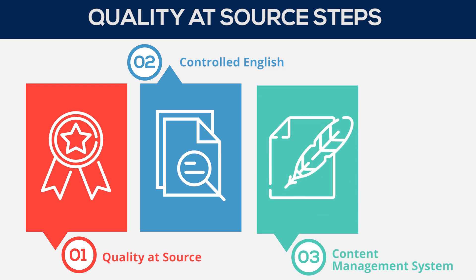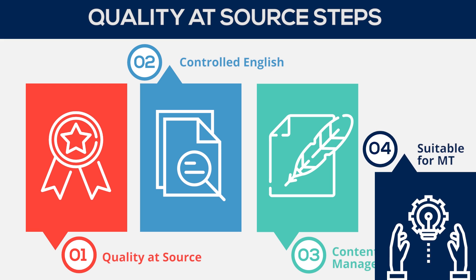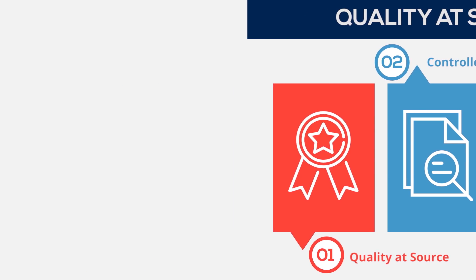Furthermore, by authoring in a content management system, you're able to save high quality translated content and reuse it for future projects. Having this system in place, you can reduce translation costs and increase consistency across projects. These quality-at-source steps result in better quality raw MT output and thus in turn higher post-editing productivity.